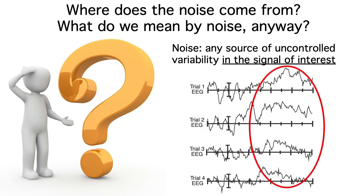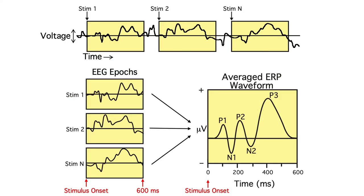There's also trial-by-trial variability in the actual neural response to the stimulus. If we don't experimentally control this variability, then it's considered noise. Keep in mind that averaging is a pretty simplistic way of dealing with noise. ERP researchers also use a variety of more sophisticated ways of dealing with things like alpha band oscillations and trial-by-trial variations in ERP responses. But these methods have their limitations as well, so averaging is still the most common way of dealing with noise.